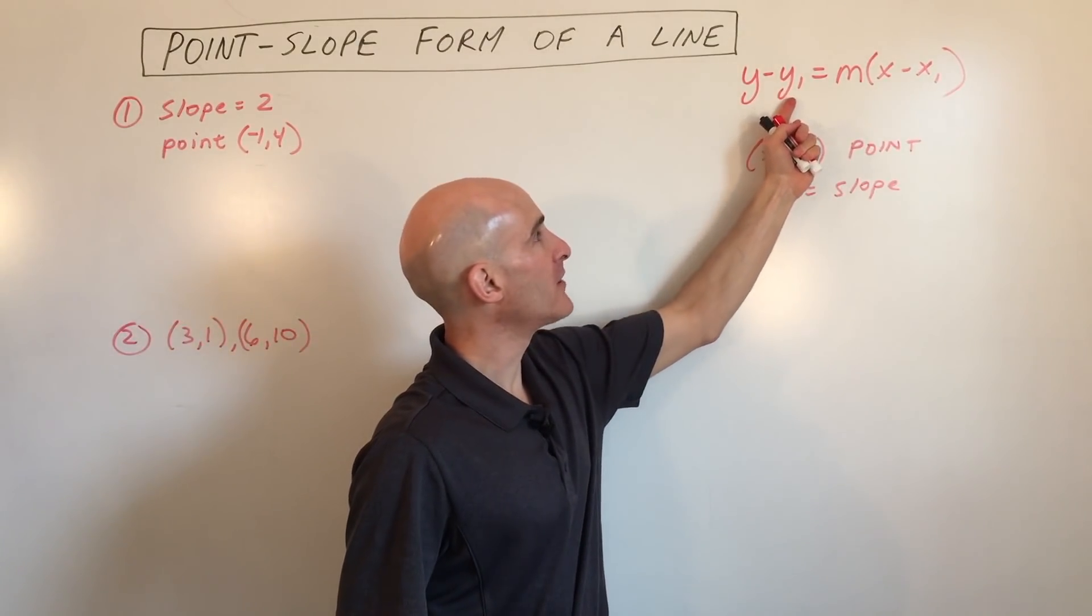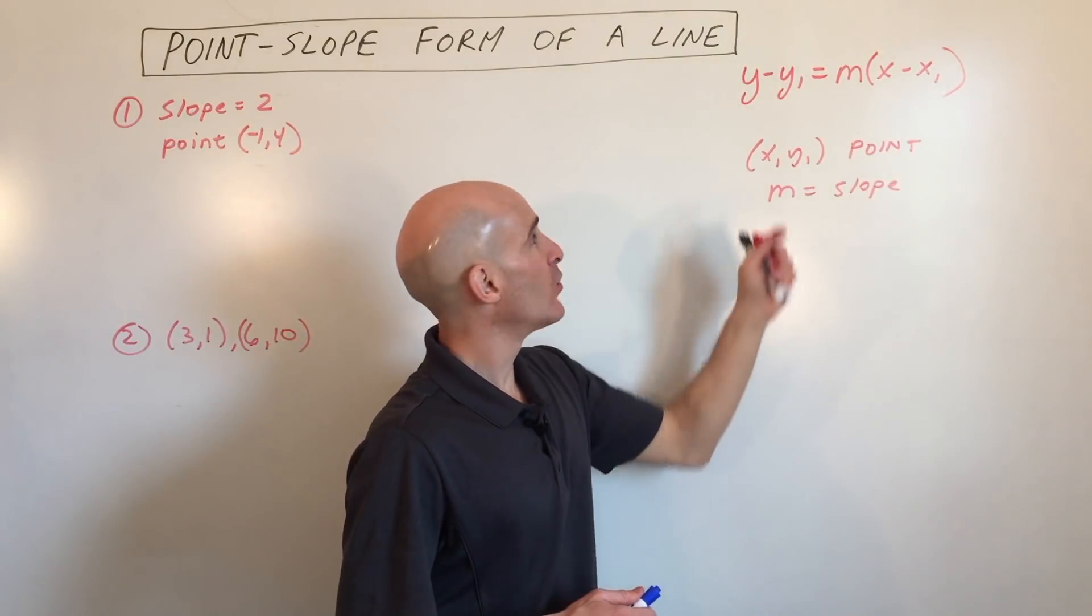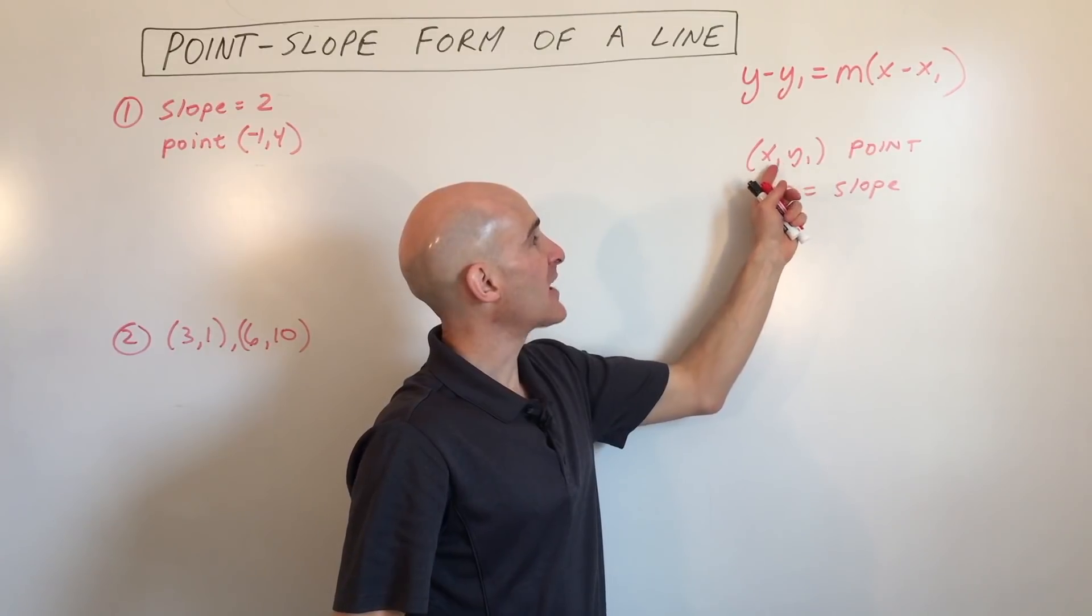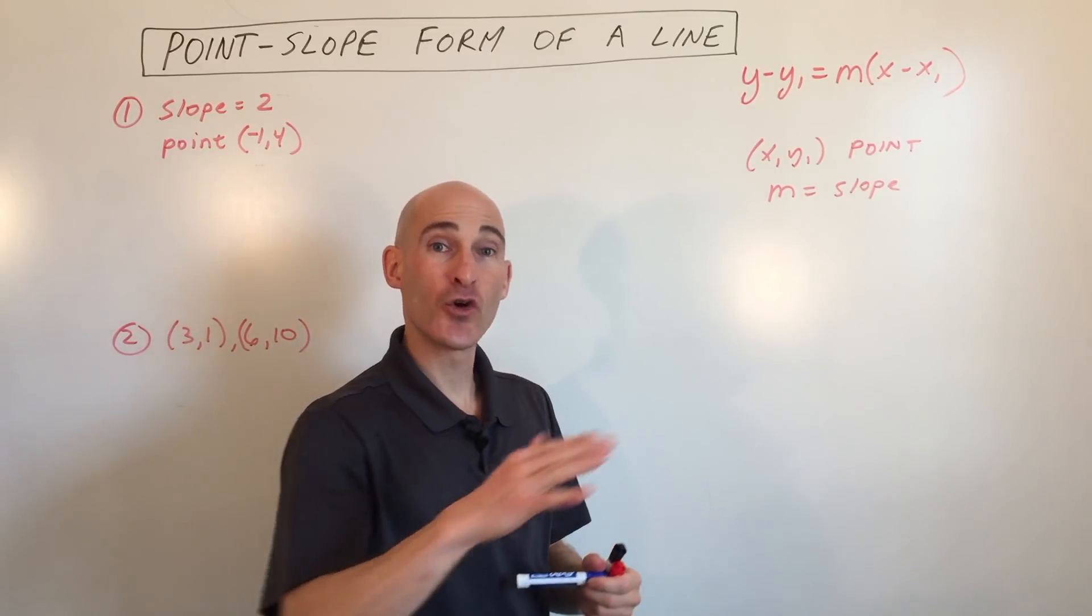The equation here is y minus y1 equals m times x minus x1. What m represents is the slope, that's the angle of the line, and what x1 and y1 represent are the coordinates of the point that the line goes through.